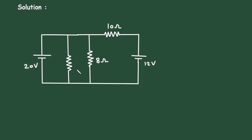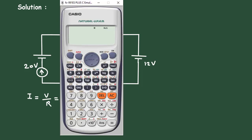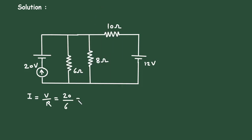Currently this is a voltage source but we have to convert it into its equivalent current source. The direction of this current source will be according to the polarity of this voltage source — positive upward, so the direction will be upward. We know that I = V/R. The value of voltage is 20 and the value of resistance is 6, so it is 20 divided by 6, which means it is 10/3 ampere. Now we can erase this voltage source.